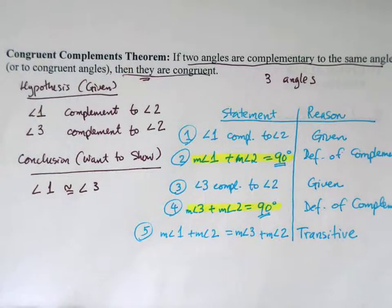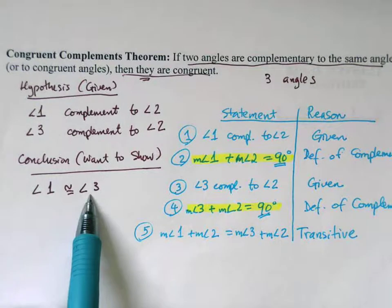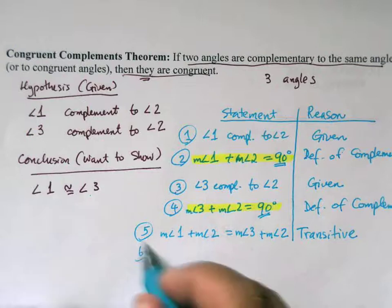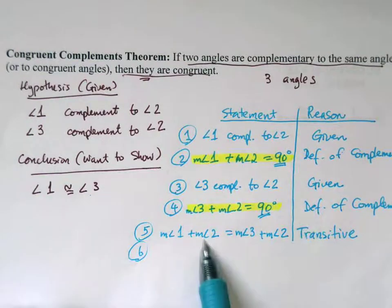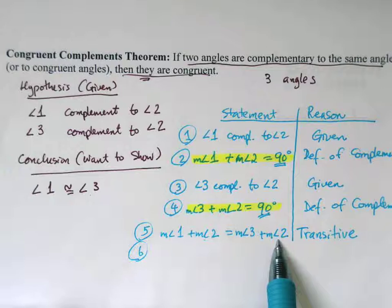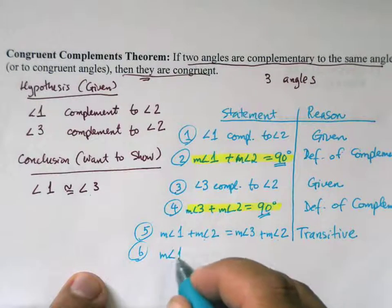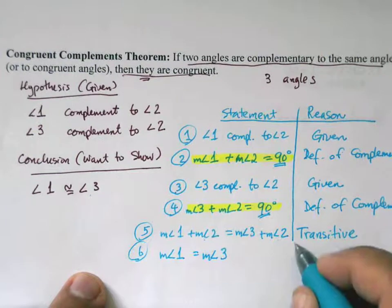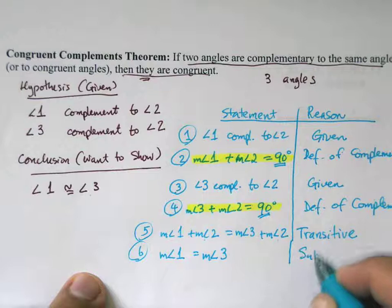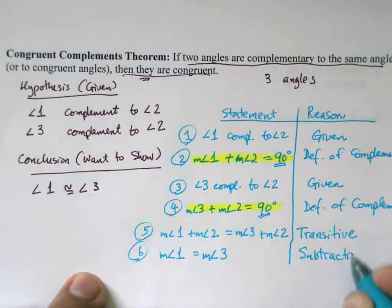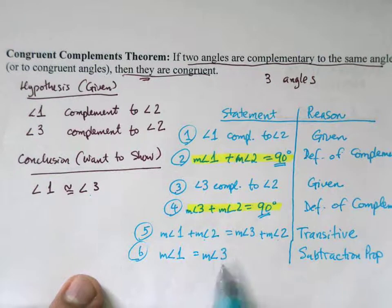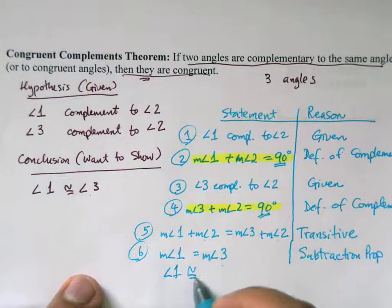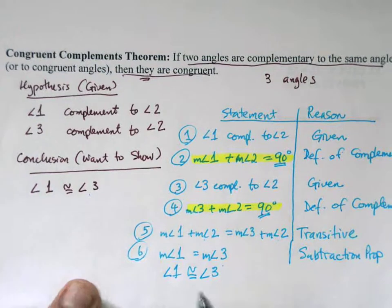We can see angle two appears on both sides, so subtracting the measure of angle two from both sides gives us: the measure of angle one equals the measure of angle three. This uses the subtraction property. We can also write this as angle one is congruent to angle three — and that is exactly what we wanted to show.